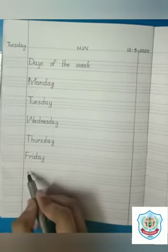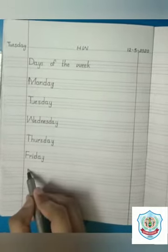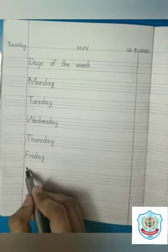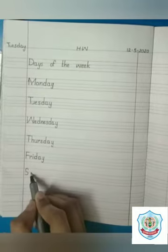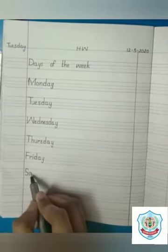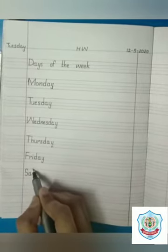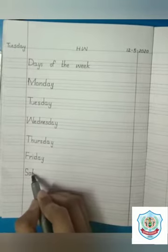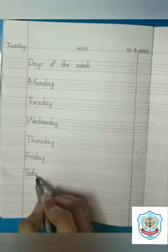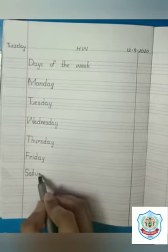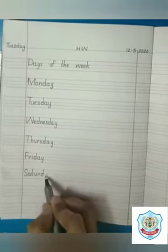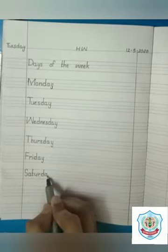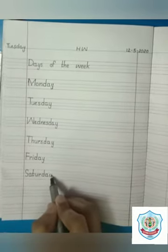Next one is Saturday. S has a sound S. A has a sound A. T has a sound T. U, R makes a sound R. D has a sound D. A, Y makes a sound A. Saturday.